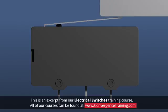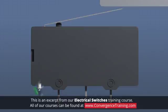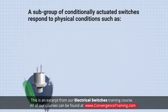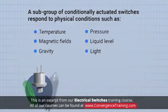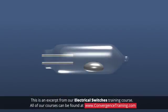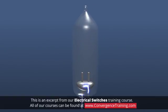Limit switches are triggered by the position of a machine part that contacts and actuates the switch. There is a subgroup of conditionally actuated switches that respond to physical conditions such as temperature, pressure, magnetic fields, liquid level, gravity, or light. These switches rely on some type of transformational mechanism to sense a condition and convert that into a switch actuation.